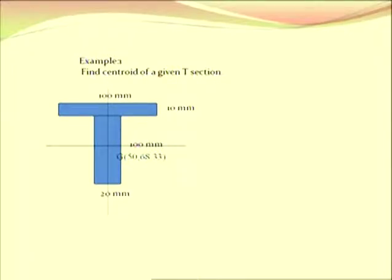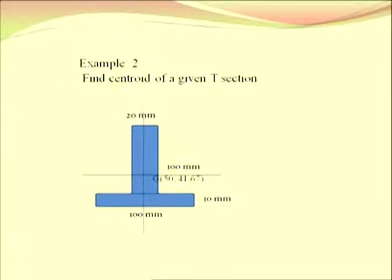We already discussed an example — the forward T-section. We studied this in the last lecture and found the CG at coordinates 50 and 68.33. This section is symmetrical about the Y-axis, so we directly got the value of X-bar. Another example was the reverse T-section. In that example we got a different value of Y-bar because the position changed — both examples are axis of symmetry examples, so X-bar remains the same but Y-bar changes due to position. So we can say position matters in CG examples.